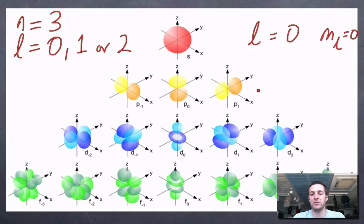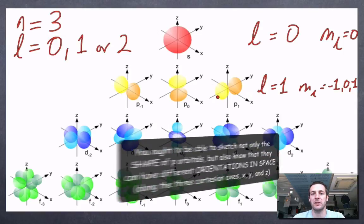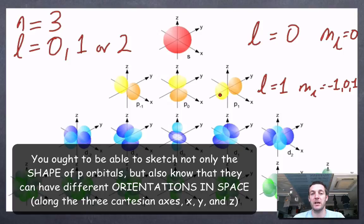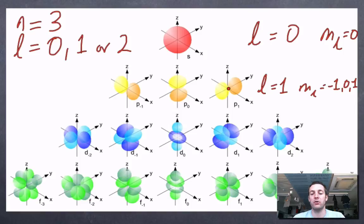In the p subshell where l is 1, ml can be minus 1, 0, or 1 — so that tells me there must be three orbitals within the p subshell. So if I'm an electron in the 3p subshell, there are three different orbitals I could be occupying. If I'm in the d subshell as an electron, I could be in one of five different orbitals. We'll see how these orbitals relate to the periodic table in a little while.